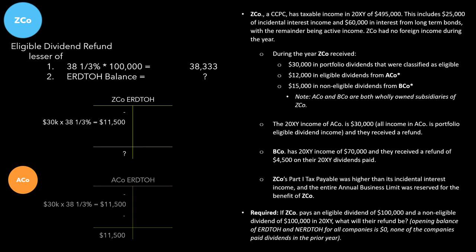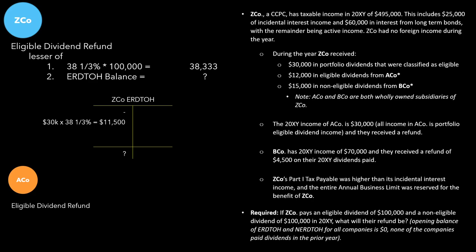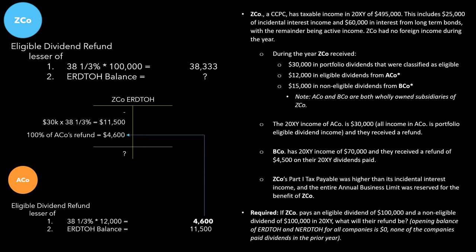Remember that number. We go to calculate the eligible dividend refund inside ACO — that's the lesser of the same two amounts. 38⅓% of the dividends paid: ACO paid a dividend of $12,000, so 38⅓% × $12,000 = $4,600. We compare that to ACO's eligible RDTOH balance of $11,500. The lesser of those two numbers is $4,600. That $4,600 is ACO's refund. Since ACO is wholly owned, 100% of ACO's refund — $4,600 — goes into ZEDCO's eligible RDTOH account.